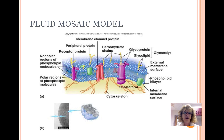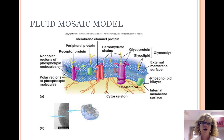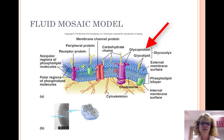The bilayer of phospholipids creates a fluid that is somewhat similar to cooking oil at room temperature. Cholesterol helps stabilize the phospholipids at body temperature in the membrane. Glycolipids and glycoproteins act as ID tags for the cell.